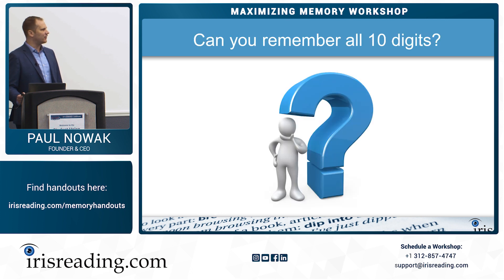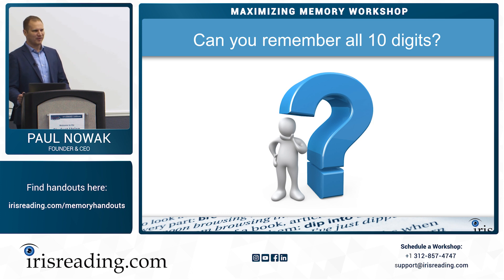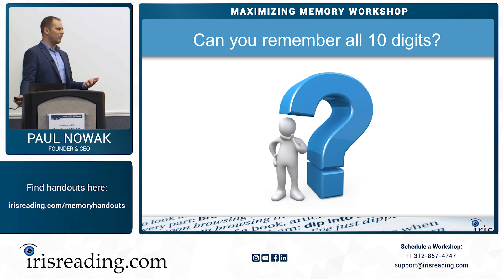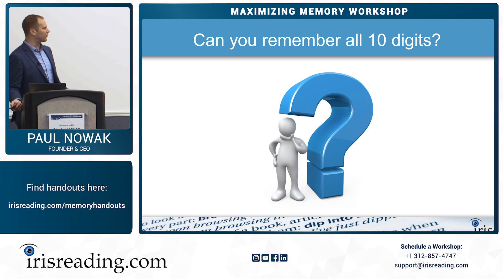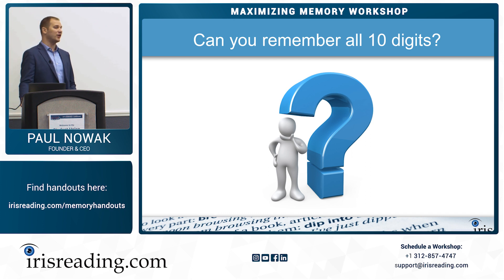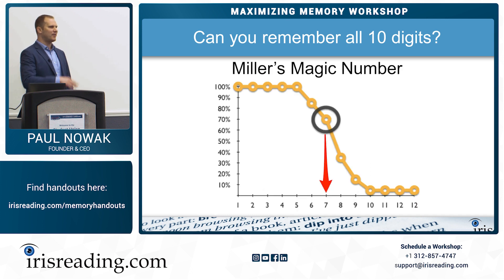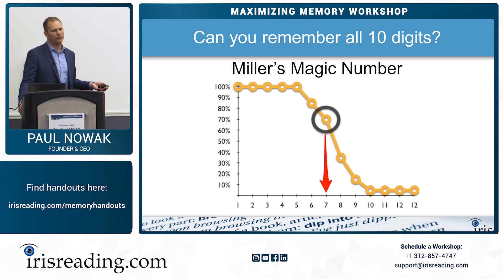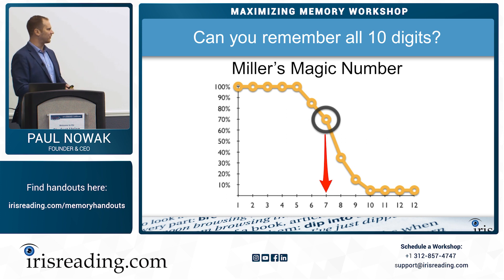This reminds me of something called Miller's Magic Number — and that number is 7. It has to do with short-term memory. You ever wonder why phone numbers are 7 digits without the area code? It's actually based on research George Miller was doing in the 1940s. In 1952, he wrote a paper called 'The Magic Number 7, Plus or Minus 2.' Miller's magic number states that we can remember about 7 things, plus or minus 2, because there's variance among individuals. It also depends on what we're trying to remember — numbers, words, the meaning of words, faces, names.